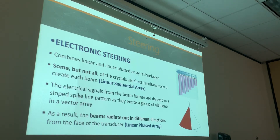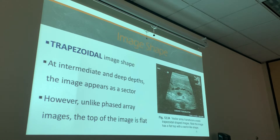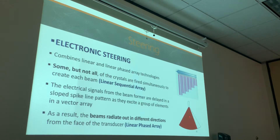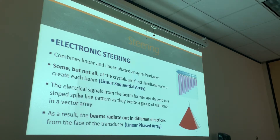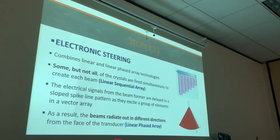How it's like a linear phase array transducer is that the beam radiates out in all different directions like a sector probe. Even though it has a flat top — if it were a linear sequential array, wouldn't this be a rectangular image? But it acts as a linear phased array where the beams actually radiate out, and that's why it creates that somewhat sector-shaped image at intermediate depths. That's how we get that trapezoidal-shaped image.